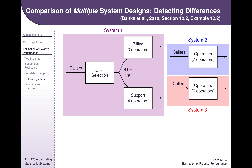Last part of the lecture, we are expanding now to thinking about what if we had three systems. So I've got a system one, a system two, and a system three. In the scenario of system one, running an example here, we've got a call center where callers come in. There is a selection process where they indicate whether they need to speak to billing or support, and then they get routed to billing and support. Billing might be staffed by three operators and support staffed by four operators.